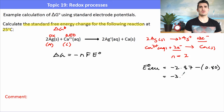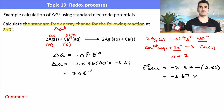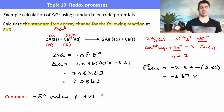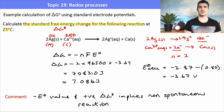Substituting the values gives a very large negative E° cell of −3.67 V. To calculate Gibbs free energy: ΔG° = −nFE° = −(2)(96,500)(−3.67), giving a large positive number. ΔG° = 708,310 J, or 708.31 kJ. A negative E° and a positive ΔG° means this reaction is non-spontaneous. The very large magnitude of both values means the reaction is very energetically unfavorable and does not proceed under normal conditions — electrolysis would be required.